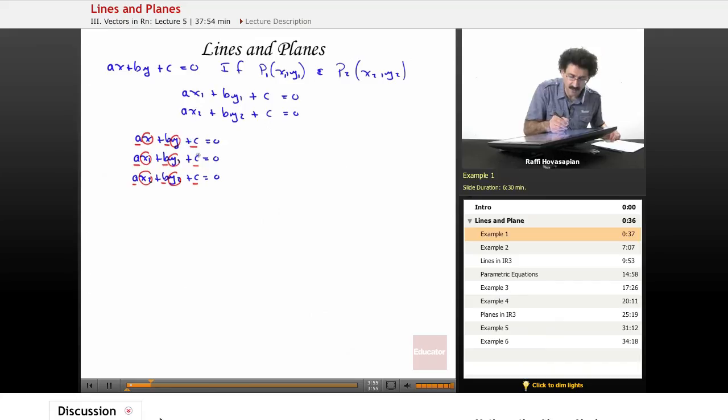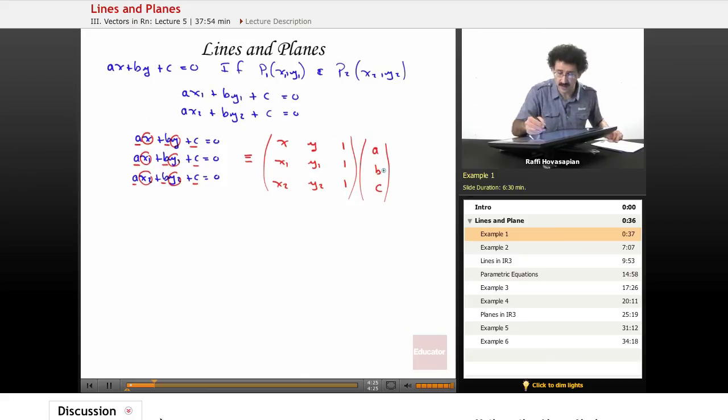And the coefficient in front of the C is the one. So let me rewrite this in matrix form. XY1, that's this, this, and the coefficient here is one. X1, Y1, one. X2, Y2, one. This is our matrix. And then multiplied by the A, the B, and the C. So the A, B, and C are the three numbers that we're actually looking for.